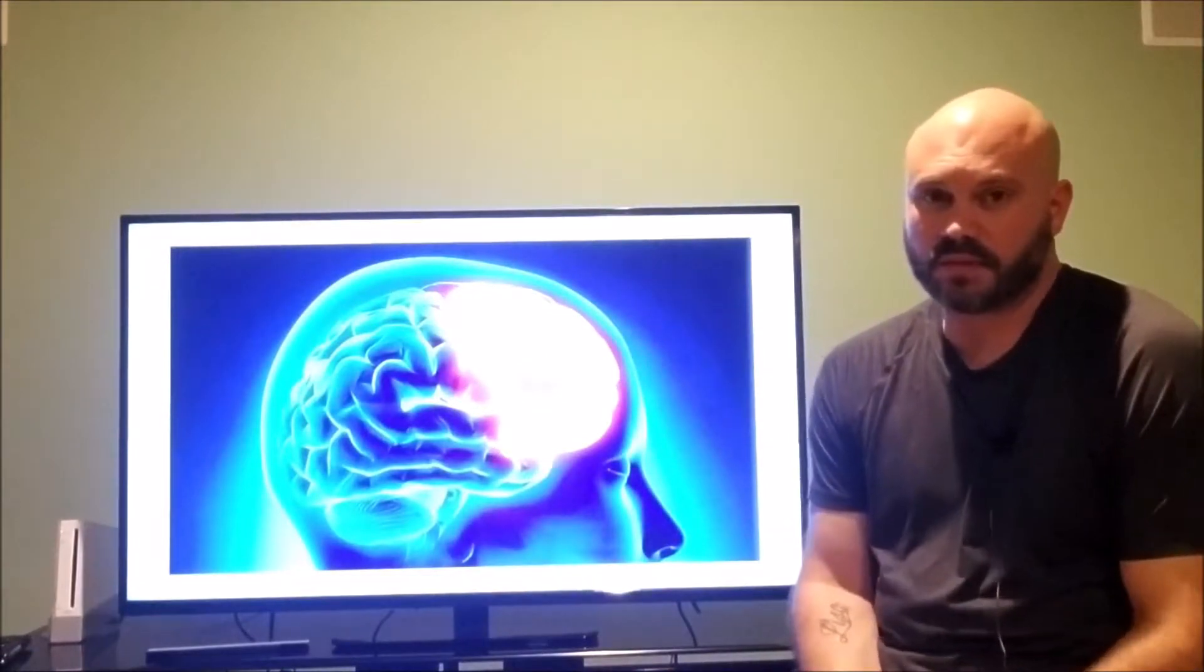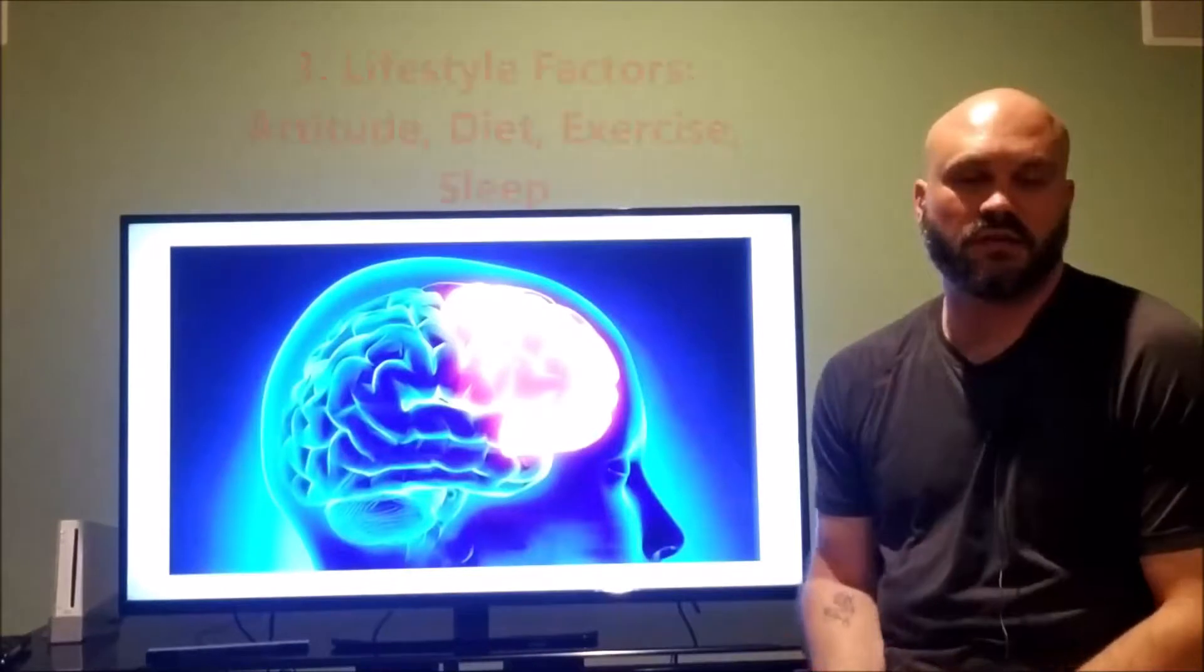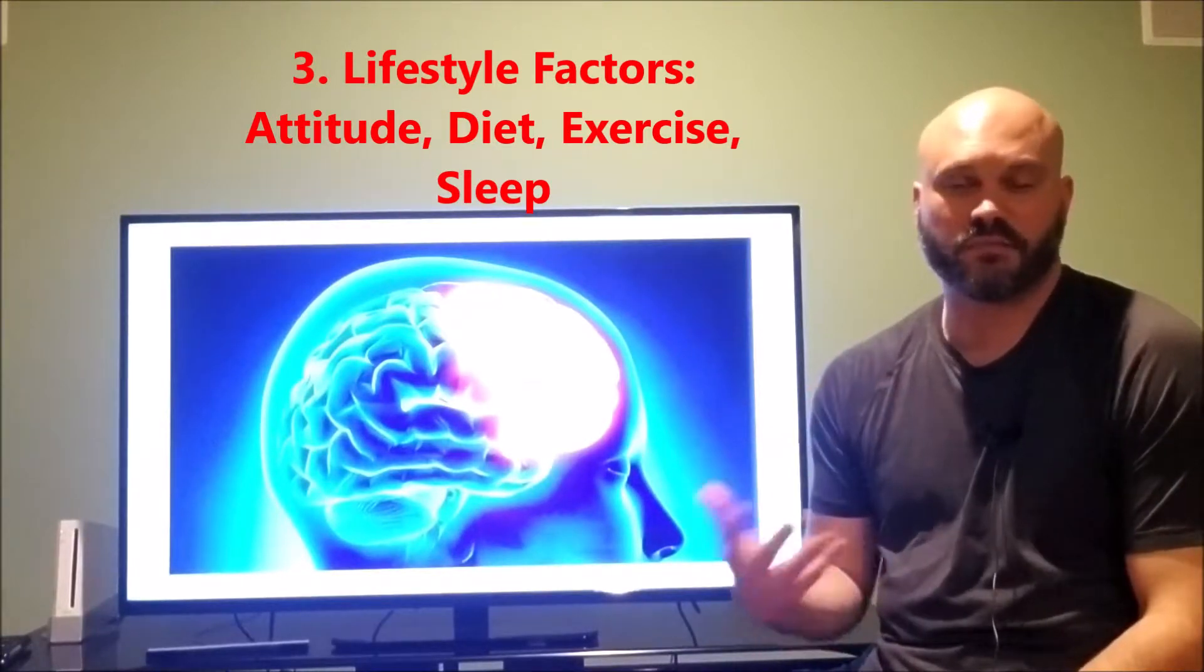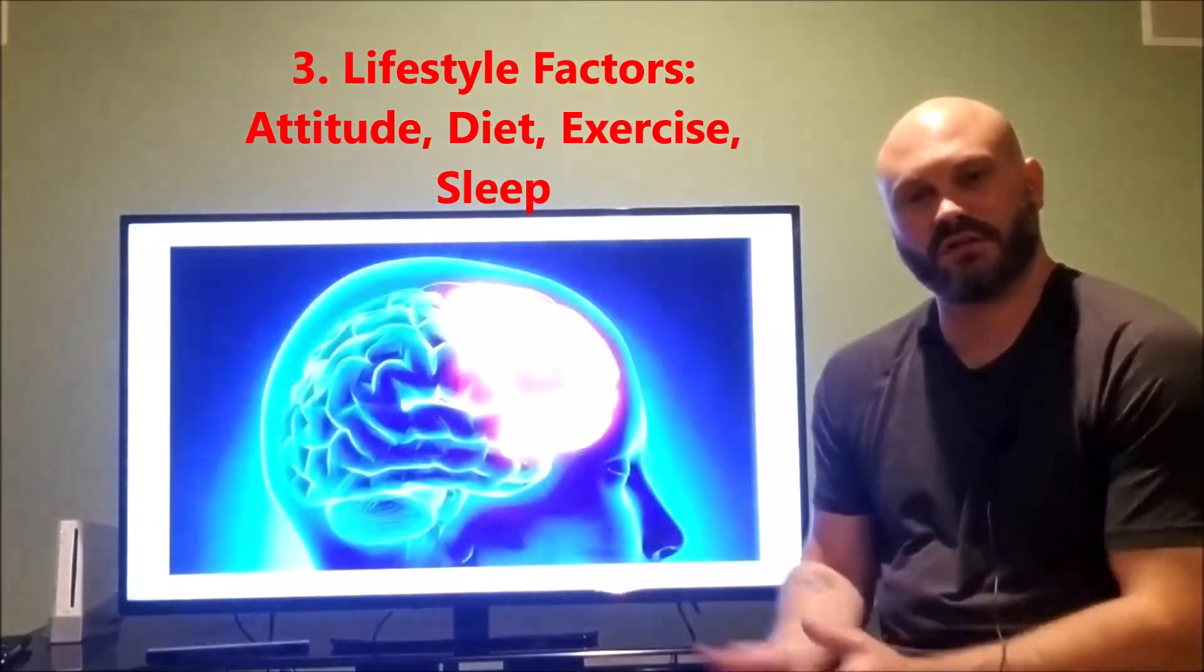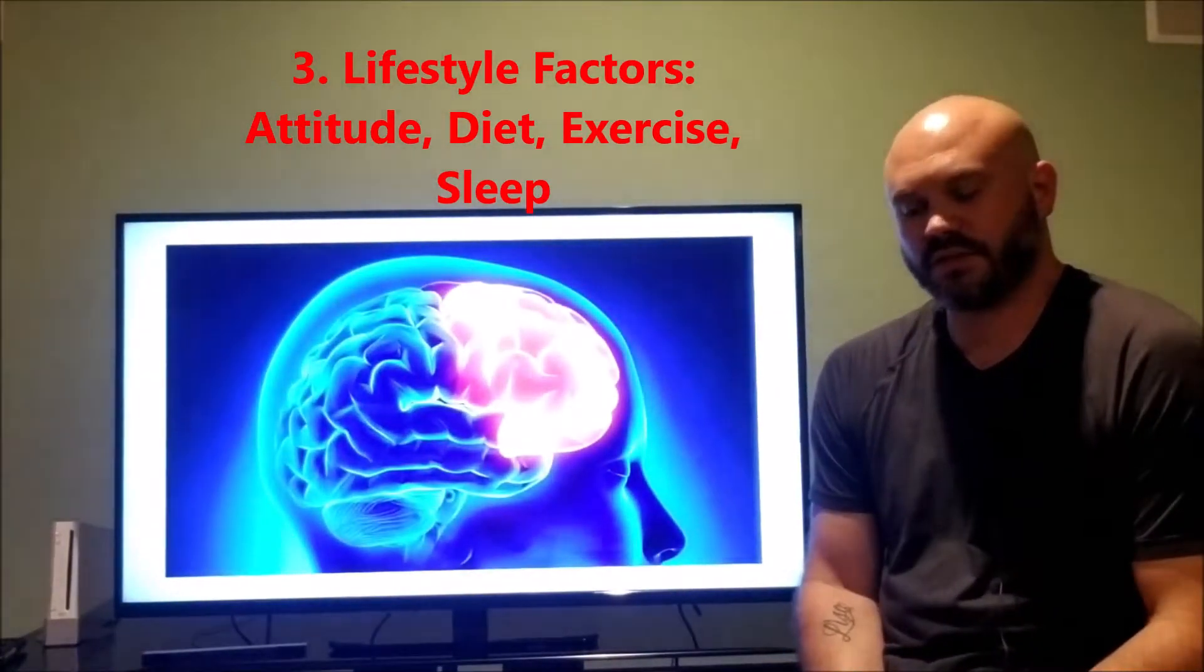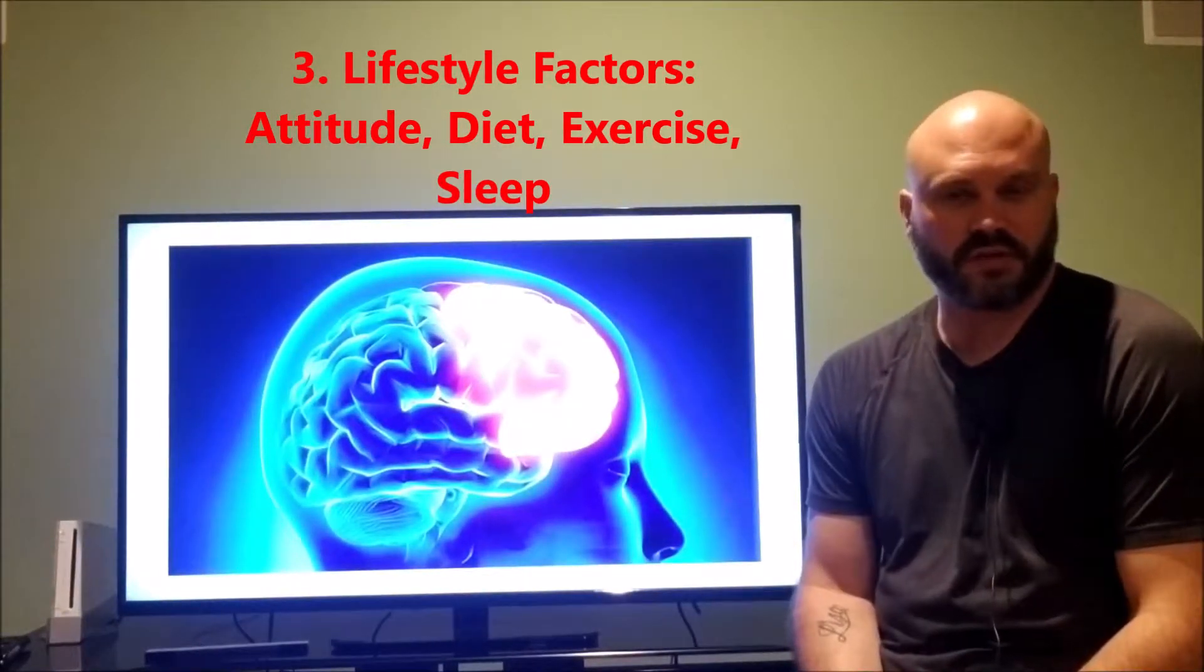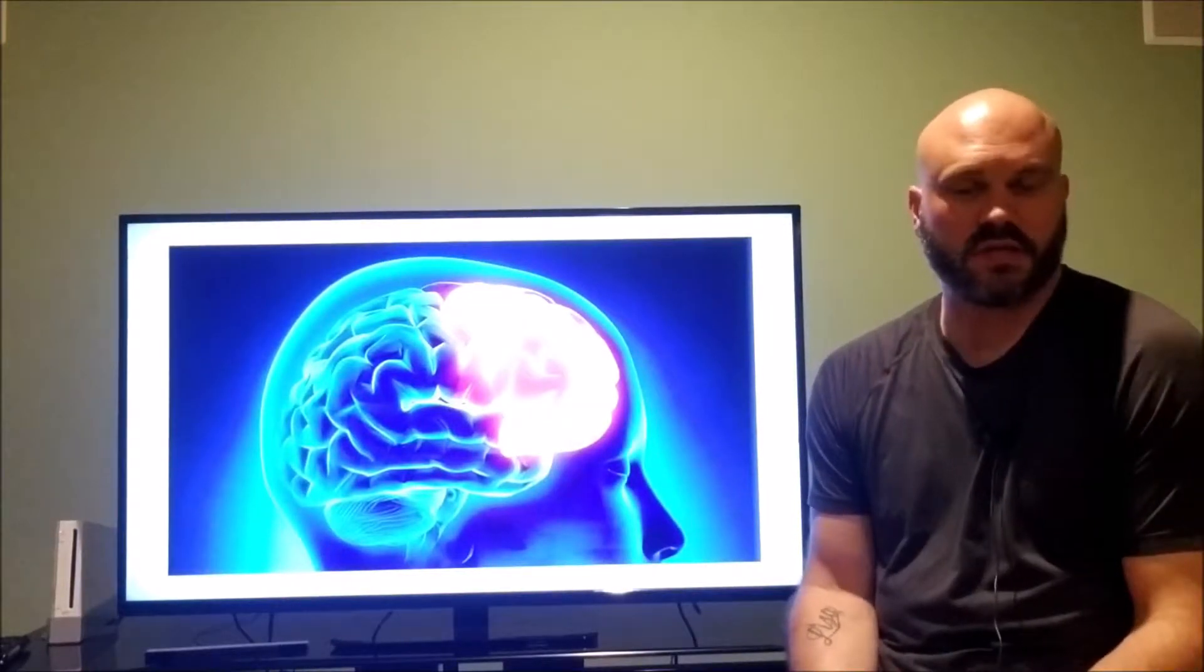The last thing I would say about increasing frontal lobe function is a variety of lifestyle factors, and these aren't going to be things you've never heard of. The most difficult thing is putting these things into your life and applying them. We often know good things that we should do, but it's hard to apply them. So these lifestyle factors include things like your attitude. A positive, healthy attitude has been shown to help brain function, including the frontal cortex function. Healthy attitudes decreased stress. Stress hormones are not good for healthy brain development.